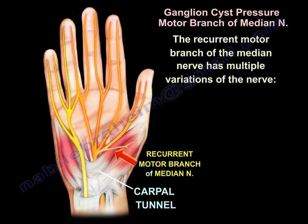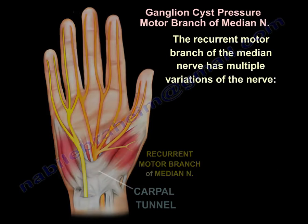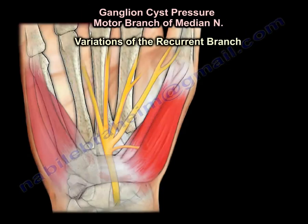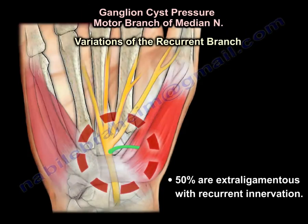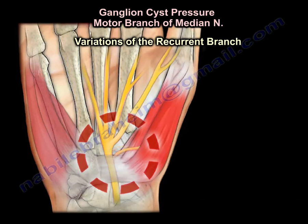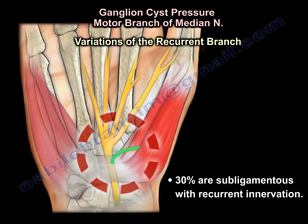As you can see from these illustrations and diagrams, this nerve has multiple variations. 50% are extra-ligamentous with recurrent innervation, 30% are subligamentous with recurrent innervation, and 20% are transligamentous with recurrent innervation.